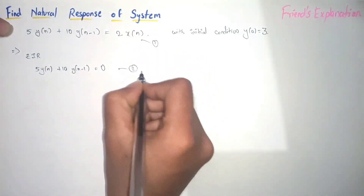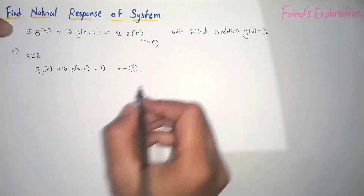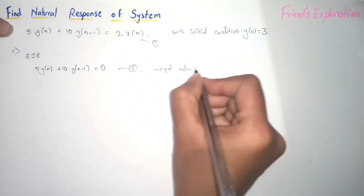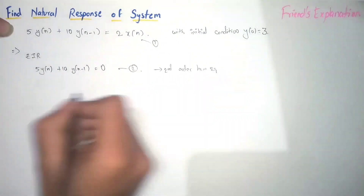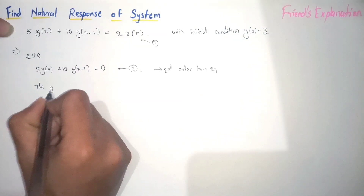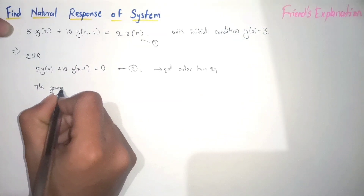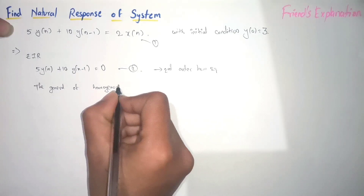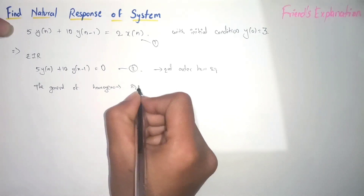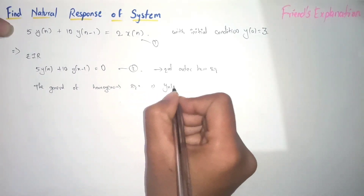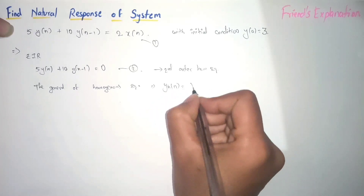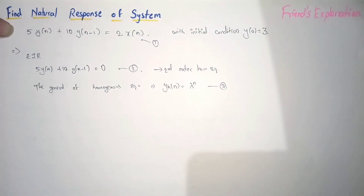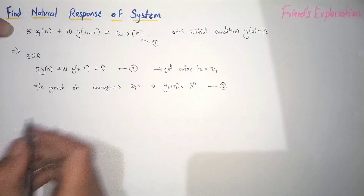This is a second-order homogeneous equation. The general form of the homogeneous equation is y_h(n) = λ^n. We will consider this as equation 3, and we will substitute it into equation 2.